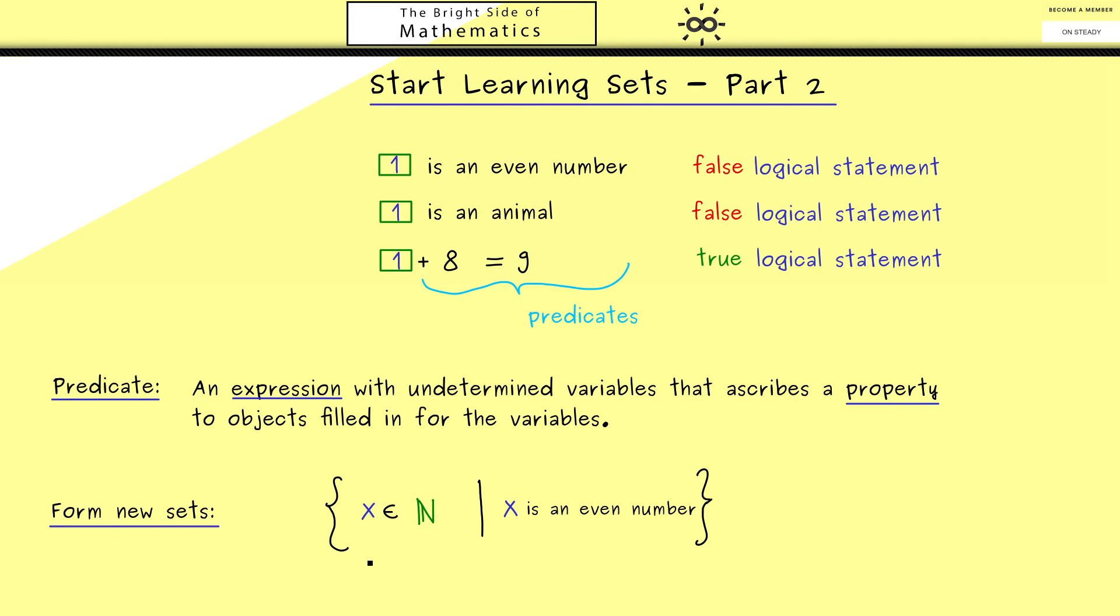The whole thing you should read as 'the set of all x in N that satisfy x is an even number.' This set contains each element from the bigger set that gives a true logical statement when you put it into the predicate.